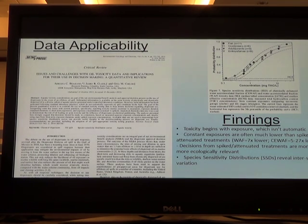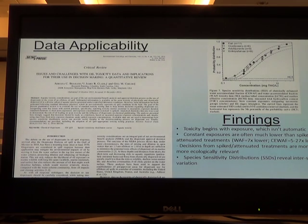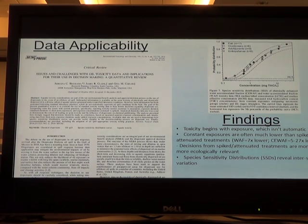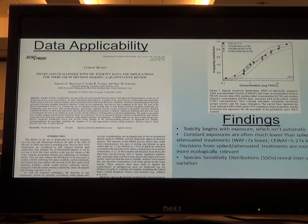What happens in nature is there's a bolus of contaminant that's introduced, and as that disperses into the water column, the concentration changes very quickly. That's called a spiked attenuated sample, and there are experiments where spiked attenuated methods are used. So if you're trying to compare a spiked attenuated experiment to a constant concentration experiment, you're going to get vastly different results. That's one example of how you really need to look at the methods to find out if you're comparing apples to apples.